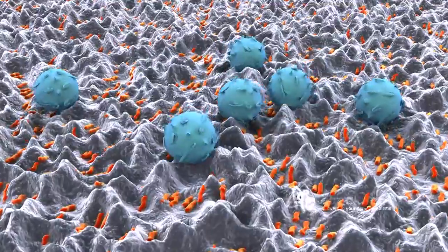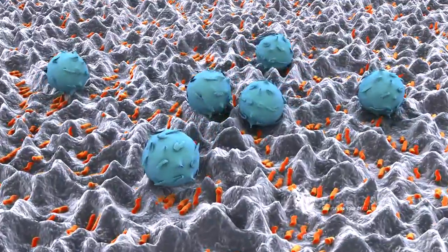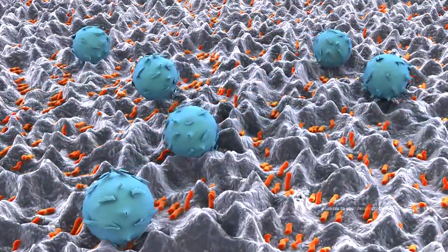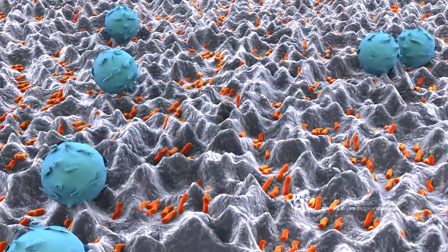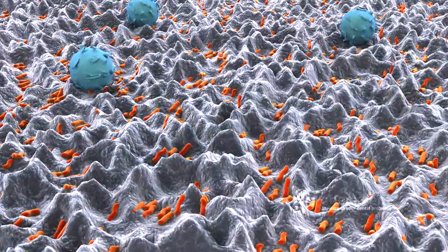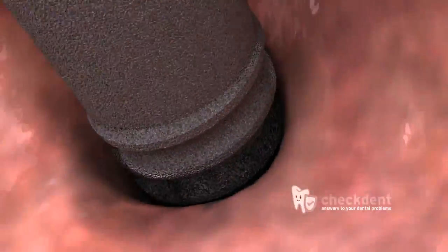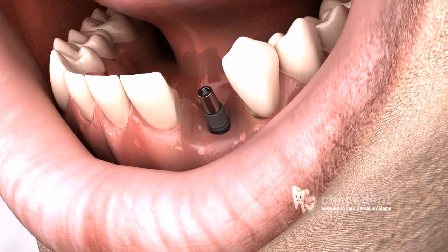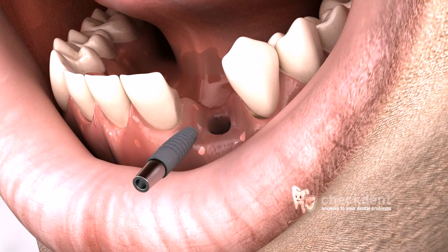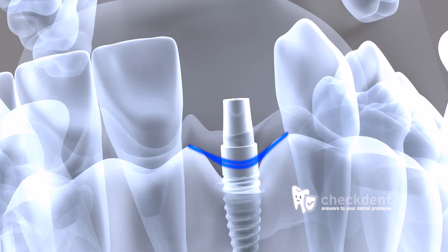Due to the rough surface of the implant, the bacteria can hide themselves away from the body's immune system, and the infection spreads out undisturbed along the implant. At some stage, the bone around the implant is disturbed by the bacterial inflammation, and the implant falls out. The X-ray clearly demonstrates the bowl-shaped bone defect in implants with plug-in connections.